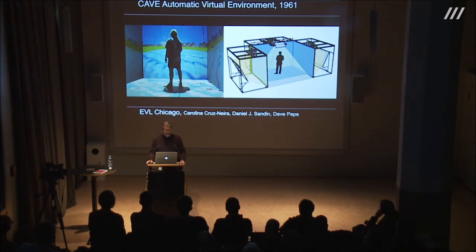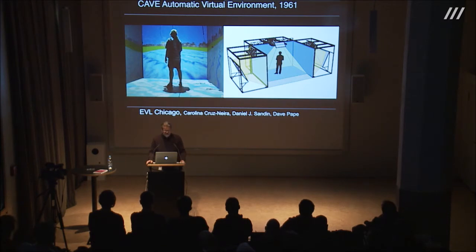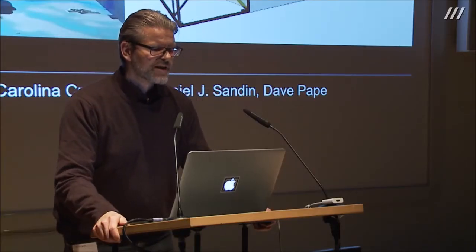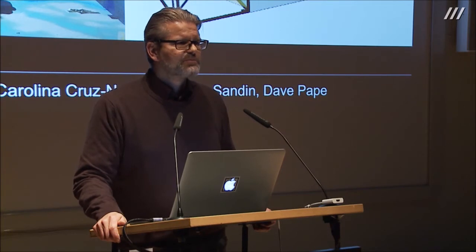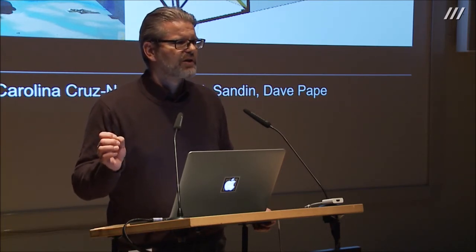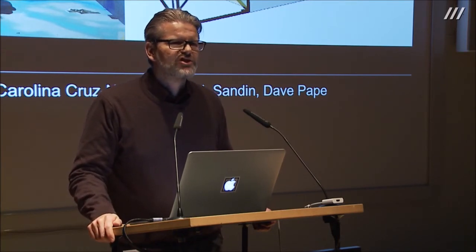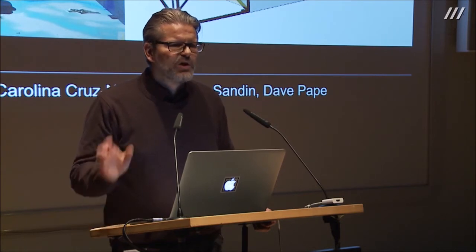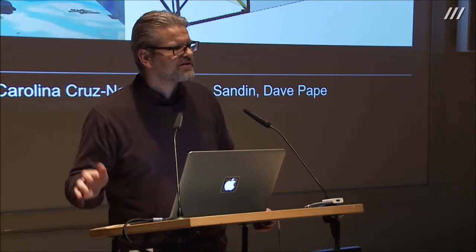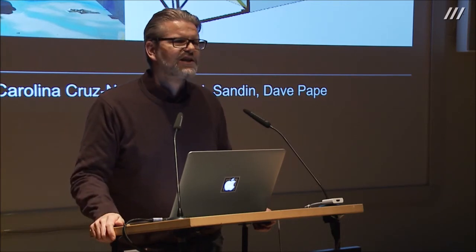One of these environments is the CAVE — Cave Automatic Virtual Environment — developed in Chicago at the EVL. It's a cube with four projection screens on the front, bottom, left, and right, projected with stereoscopic imagery. There was a head-tracking system so one person could wear a head tracker and have the stereoscopic projection frustum generated perfectly for their viewing position, while other audience members still saw 3D but slightly distorted.